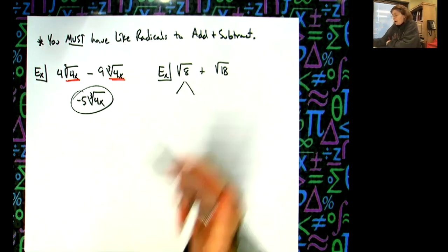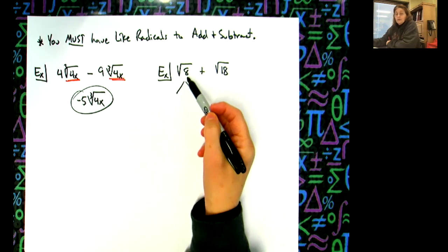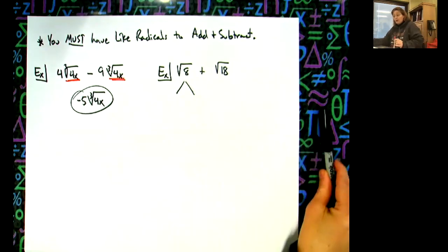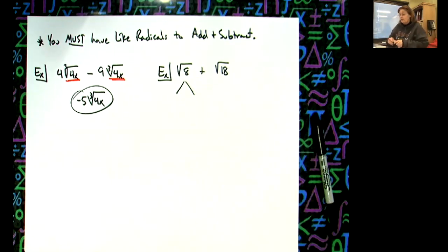I want the biggest perfect square root - that's going to make my problem go really fast. So let's make a list of perfect square roots over here.